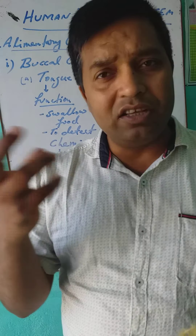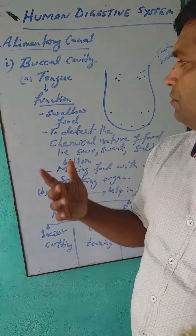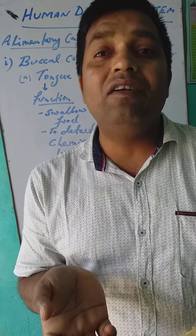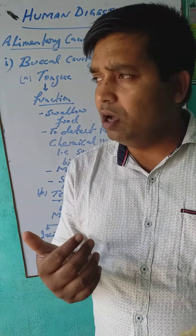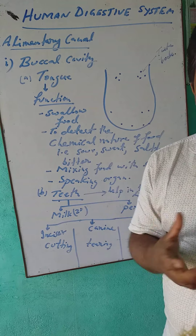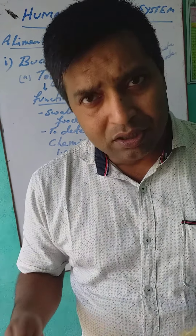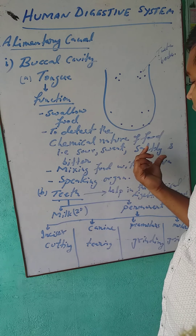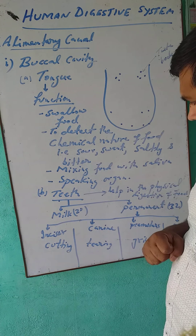So what are the functions of our tongue? The first function of the tongue is to swallow food. When we eat food, it does not move automatically inside our body — the tongue helps to swallow it inside. The second function is to detect the chemical nature of food — meaning whether it is sweet, bitter, or salty. The tongue helps us know what taste the food has.